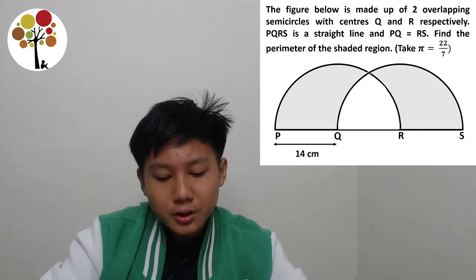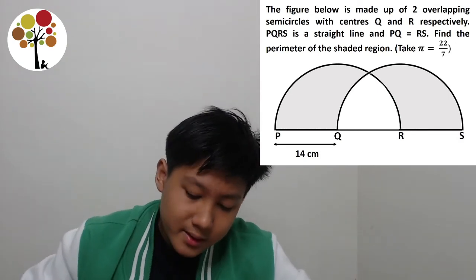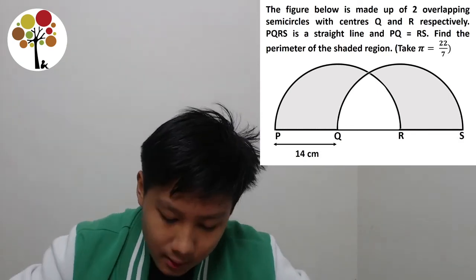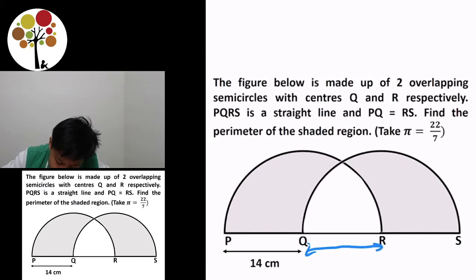So first thing when you get a question, you write down what you know. Since they say that Q and R are the centers, it means that this here is 14 cm and this here is also 14 cm.